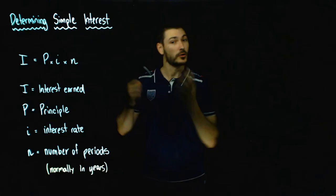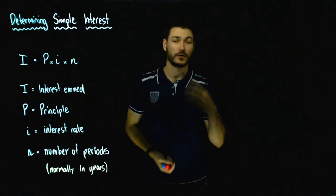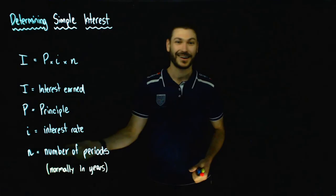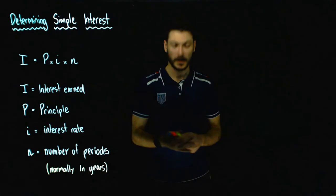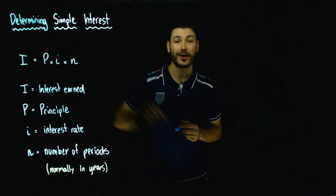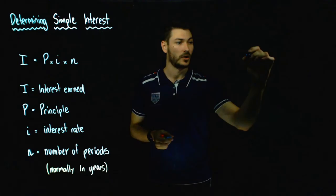We've got the information, and what we want to do is construct our solution almost identical to the formula — but instead of words like interest earned, P equals principal, I equals interest rate, and N equals number of periods, we want to put in values and calculate it. So the first thing when solving one of these problems is always write the formula. I'm going to write it without the multiplication symbols: I equals P-I-N.